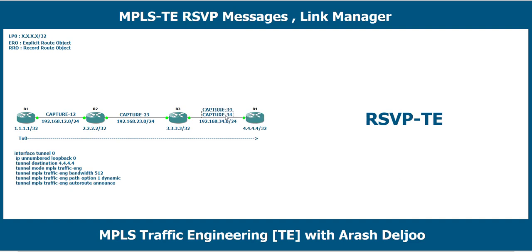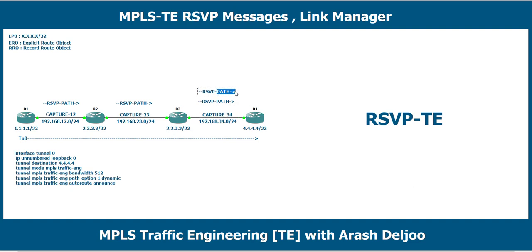First we have the RSVP path message on these links, as you learned about in the previous scenario. We see RSVP path messages on all links. After that, we receive the RSVP reserve message in the opposite direction — the RSVP reserve message travels back to R1. Let me show you captures 1-2, 2-3, and 3-4.